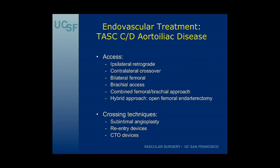If you're going to tackle these advanced aorto-iliac lesions, you have to be prepared to approach these from any number of access sites — usually one arm and two groins will be prepped. The most common approach is ipsilateral retrograde, but in about 50% to 60% of cases you'll need bilateral femoral access or additionally brachial access. Most of these lesions can still be treated using a subintimal angioplasty technique — probably 60% to 70% — and the rest of the time, reentry devices or CTO devices will be needed.